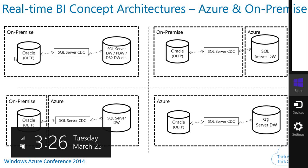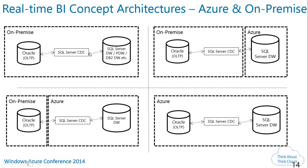You can have everything on-premise, or Oracle on-premise with the warehouse on-premise and CDC on-premise, or you can have either the OLTP system or the warehouse on Azure. Irrespective of where you have your OLTP system, you can run the CDC service either on-premise or on the cloud. This flexibility means you can do real-time changes really quickly.